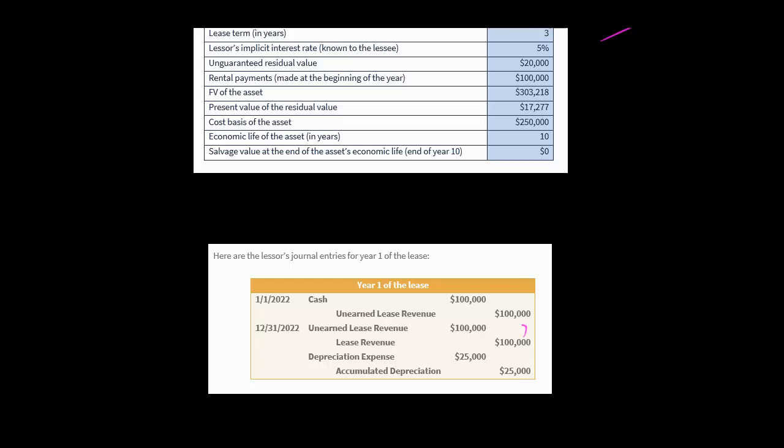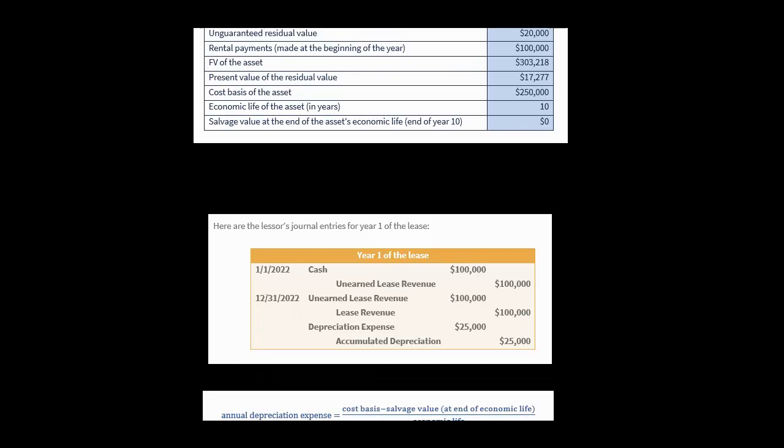This affects the lessor's income statement. There's no interest revenue — just lease revenue of $100,000, and it's going to be $100,000 each period, recognized on a straight-line basis.